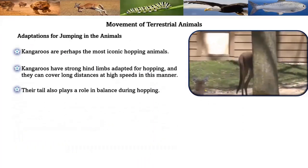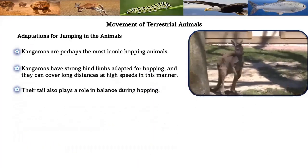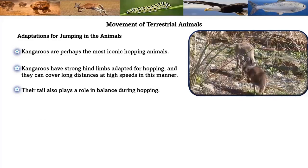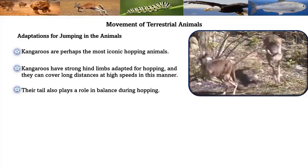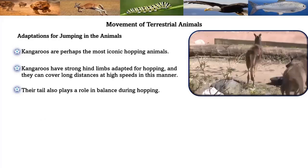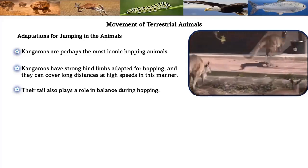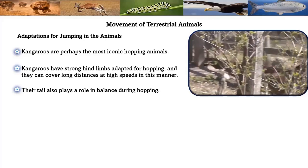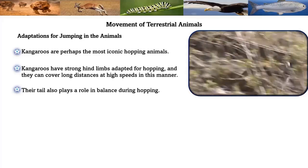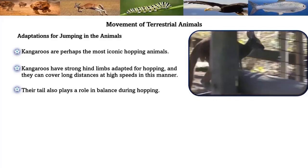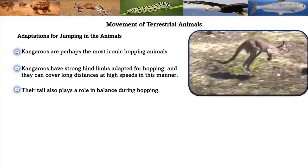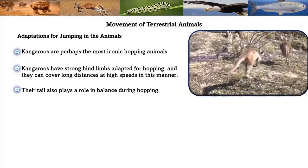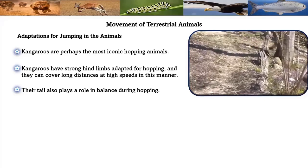Adaptation for jumping in animals typically involves the use of powerful hind limbs to propel the animal through a series of jumps or hops. Kangaroos are perhaps the most iconic hopping animals. They have strong hind limbs adapted for hopping and can cover long distances at high speeds. Their tail also plays a role in balance during hopping.